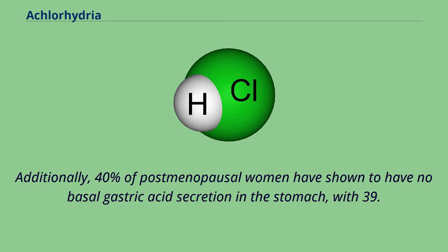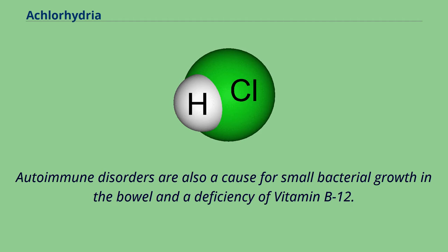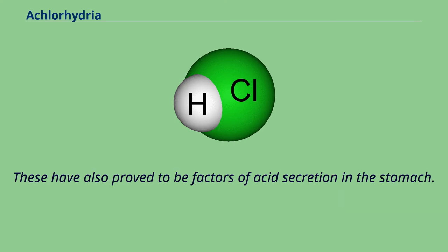Additionally, 40% of postmenopausal women have shown to have no basal gastric acid secretion in the stomach, with 39.8% occurring in females 80–89 years old. Autoimmune disorders are also linked to advancing age, specifically autoimmune gastritis, which is when the body produces unwanted antibodies and causes inflammation of the stomach. Autoimmune disorders are also a cause for small intestinal bacterial overgrowth and a deficiency of vitamin B12, which have proved to be factors in acid secretion in the stomach.